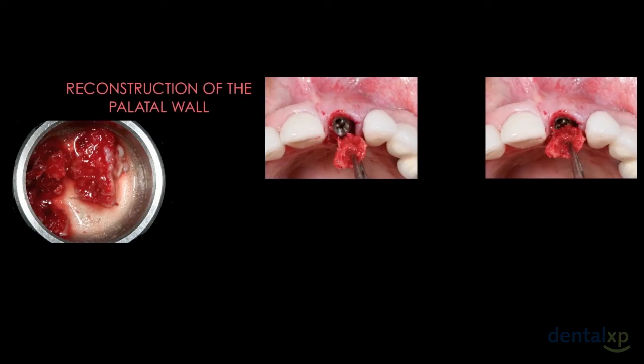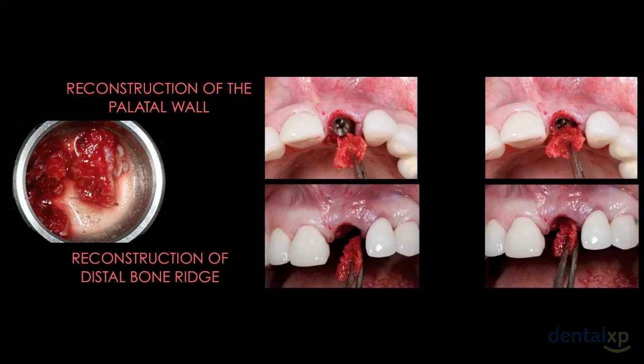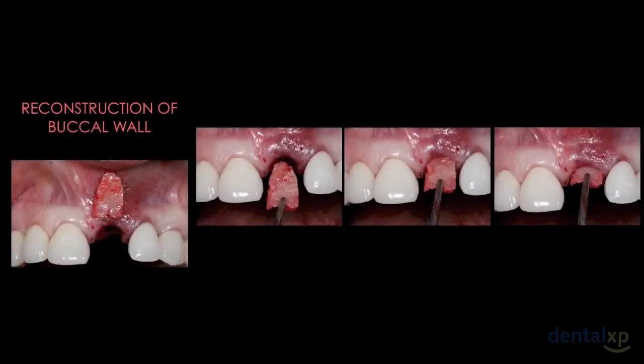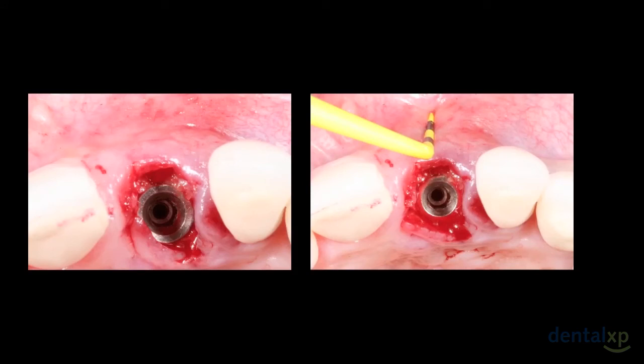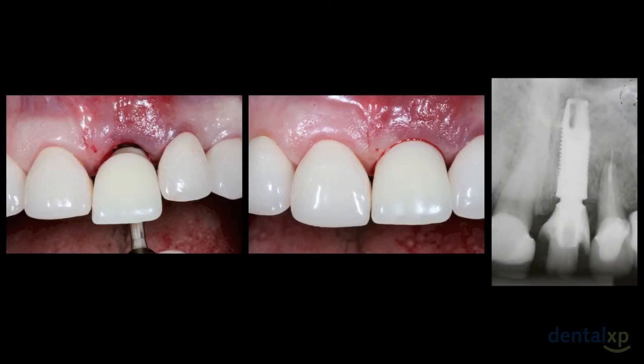We then start the reconstruction. Firstly, we reconstruct the palatal wall; after that, we reconstruct the distal bone bridge; and lastly, we reconstruct the buccal bone wall, as you can observe here. After total socket reconstruction, the provisional crown was inserted out of occlusion. The X-ray immediately after reconstruction shows the bone reconstructed at the distal aspect.